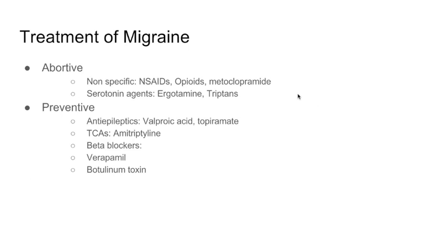The treatment for headaches — and today we're specifically talking about migraine headaches — consists of two different approaches: abortive treatment and preventative treatment. The abortive treatment is to abort or stop the headache the patient is currently having. The preventive treatment is to prophylax or prevent patients from having recurrent headaches.